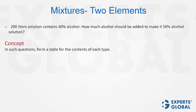you form a table of content. Earlier, we have a total solution which is made up of alcohol and water. The total is 200 liters, 40% of which is alcohol — that is 80 liters — and water forms the rest, which is 120 liters.